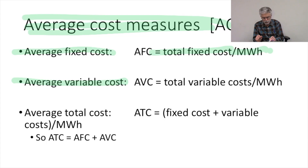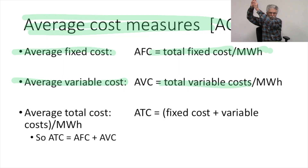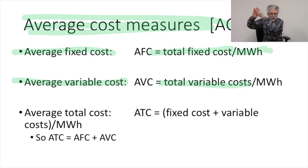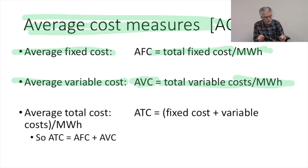Average variable cost is just your total fuel cost divided by the total number of megawatt hours you generate. Of course, your total variable costs are going to go up as you increase the capacity factor of the plant, and so will your megawatt hours. So our average variable cost for this plant is just the total variable cost divided by the megawatt hours we generate.